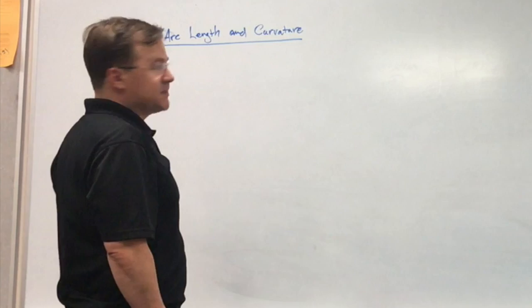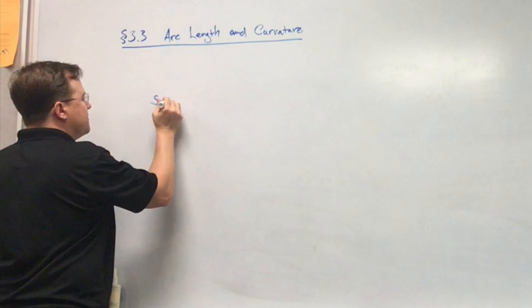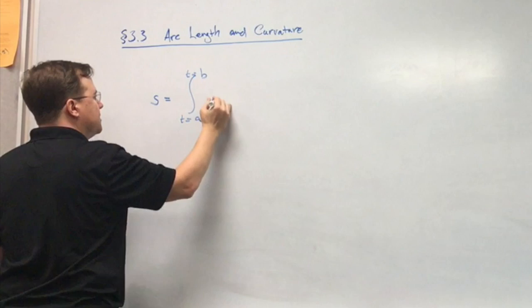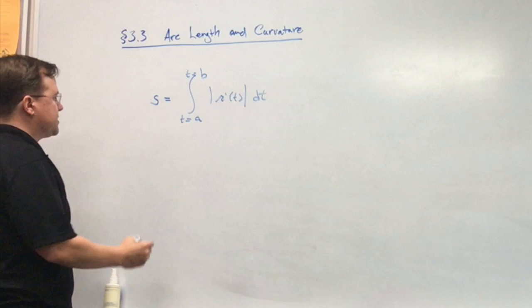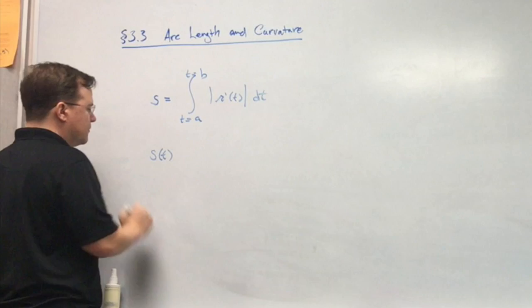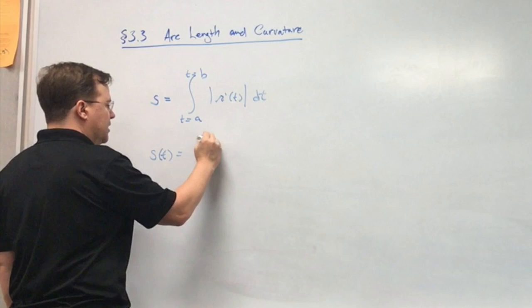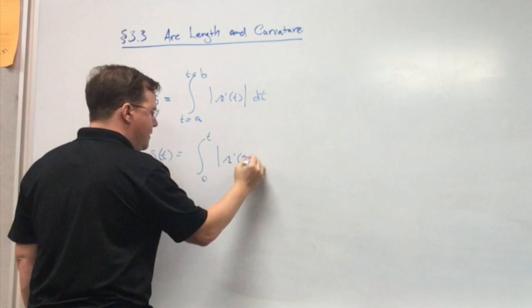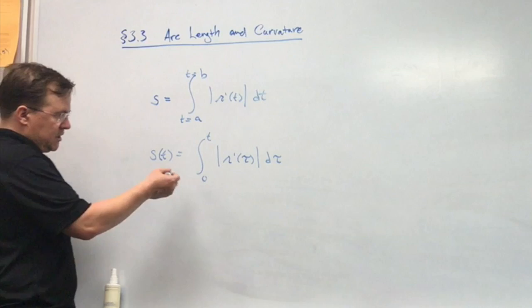I realize I've already gotten into section 3.3 somewhat, because that's arc length and curvature. I've already told you what arc length is. We already saw that the arc length of a curve from t equals a to t equals b is really the anti-derivative of the speed function. We also saw that if you take the arc length and make it a function of t, starting at 0, you can find the length of the arc from t equals 0 up to any given point. This is also useful when you're going to re-parameterize something.